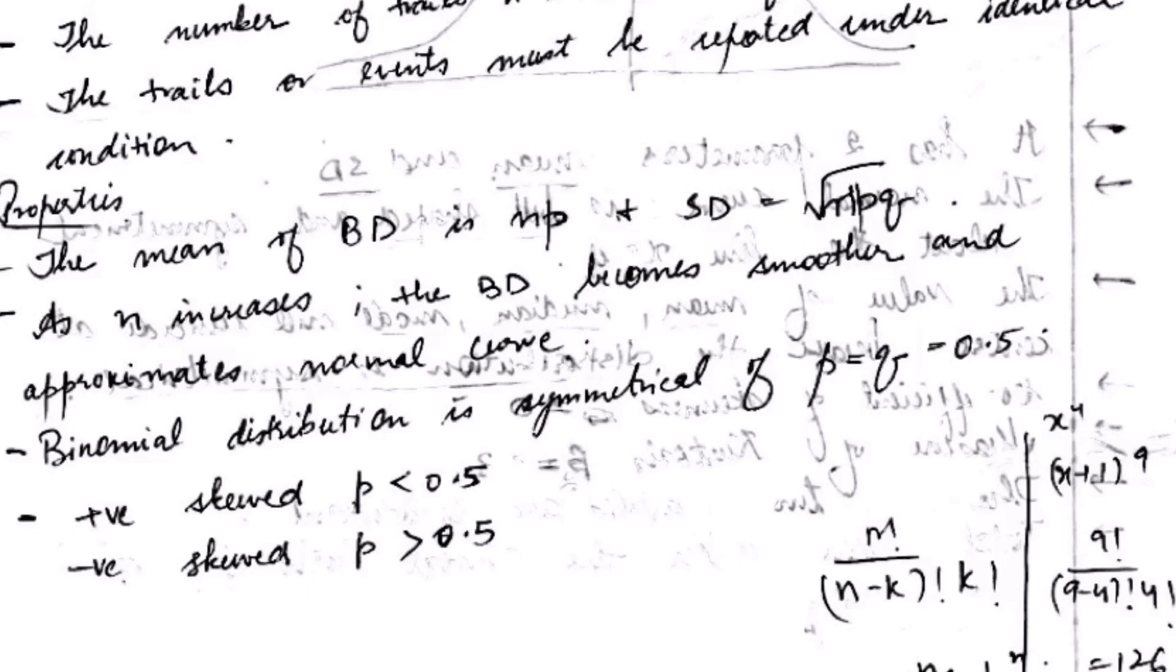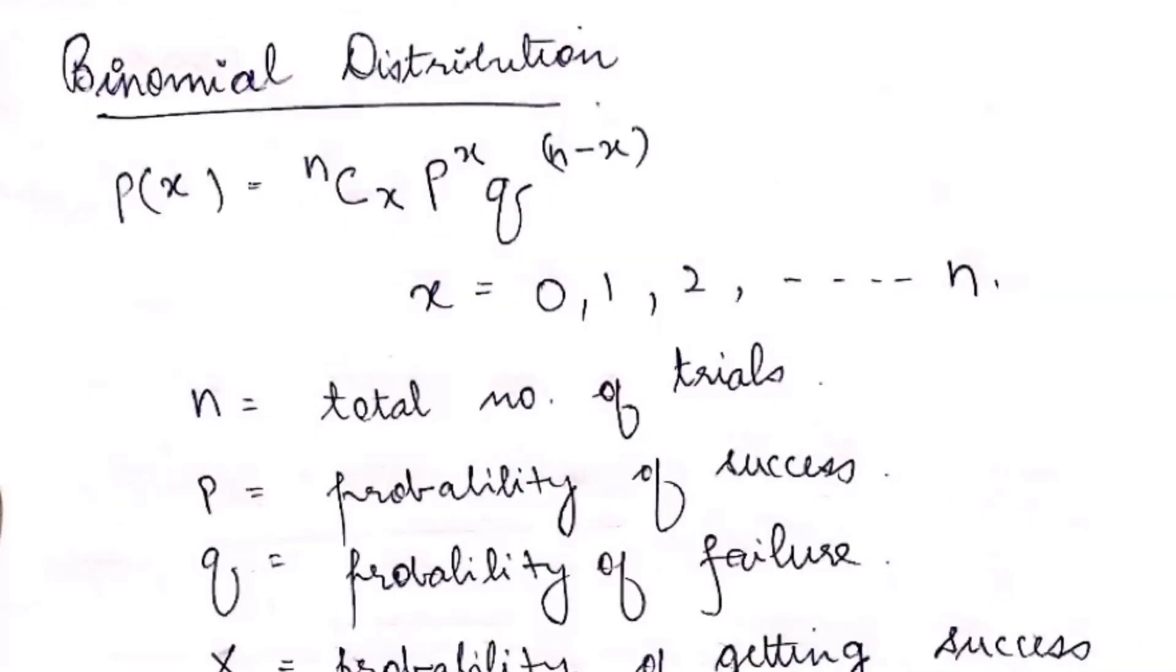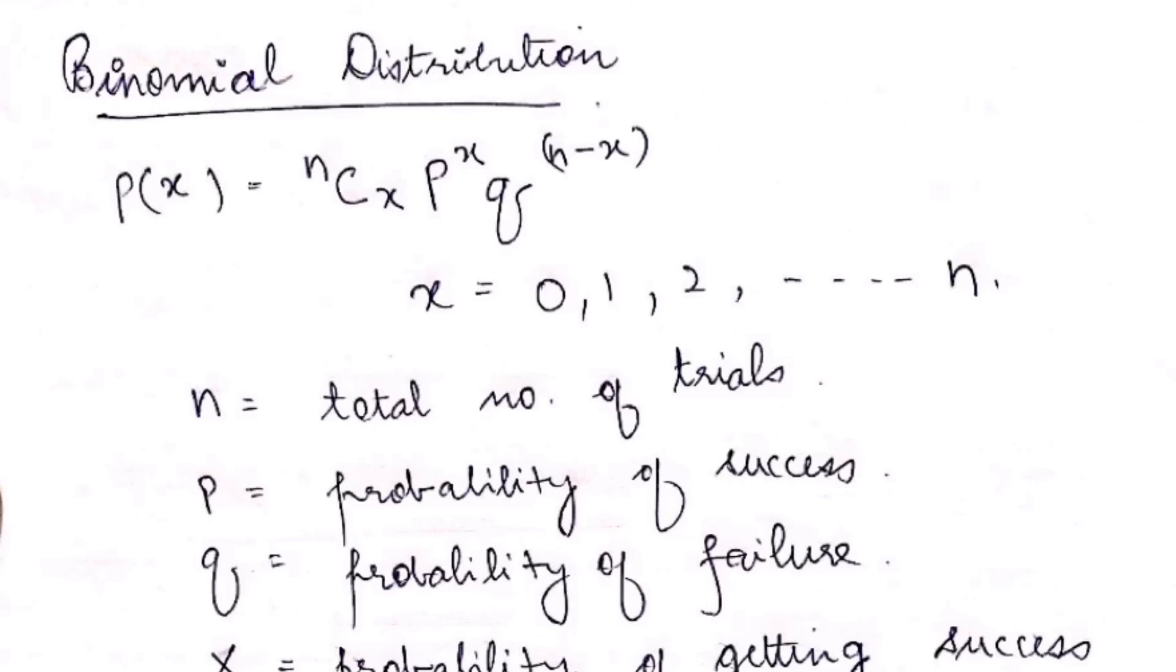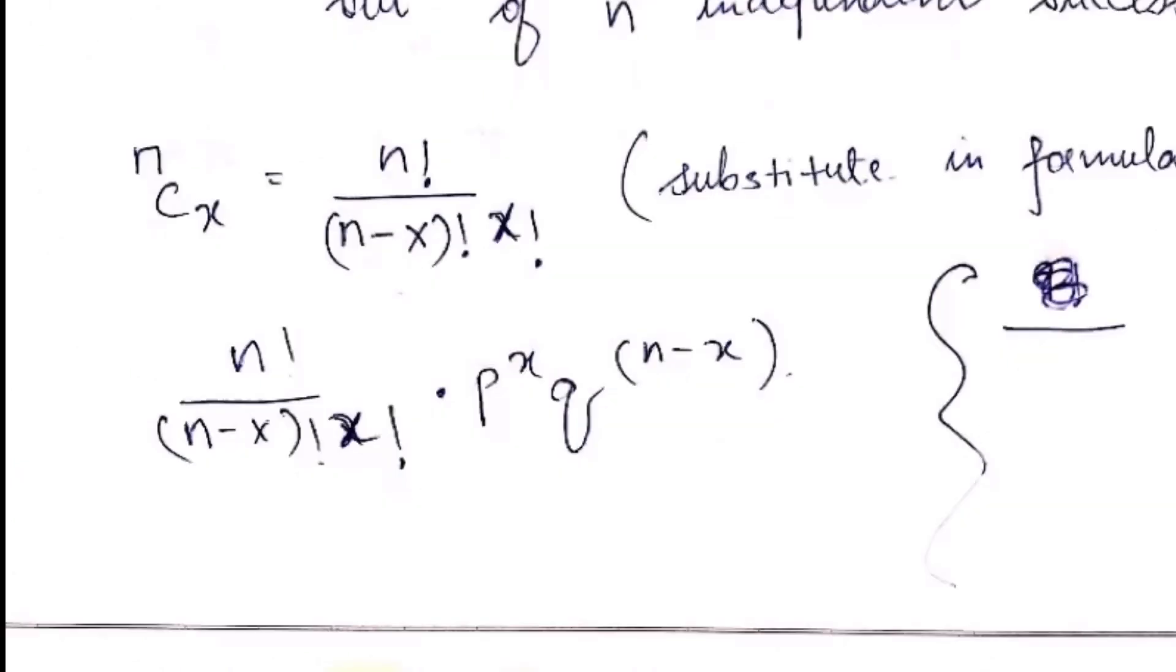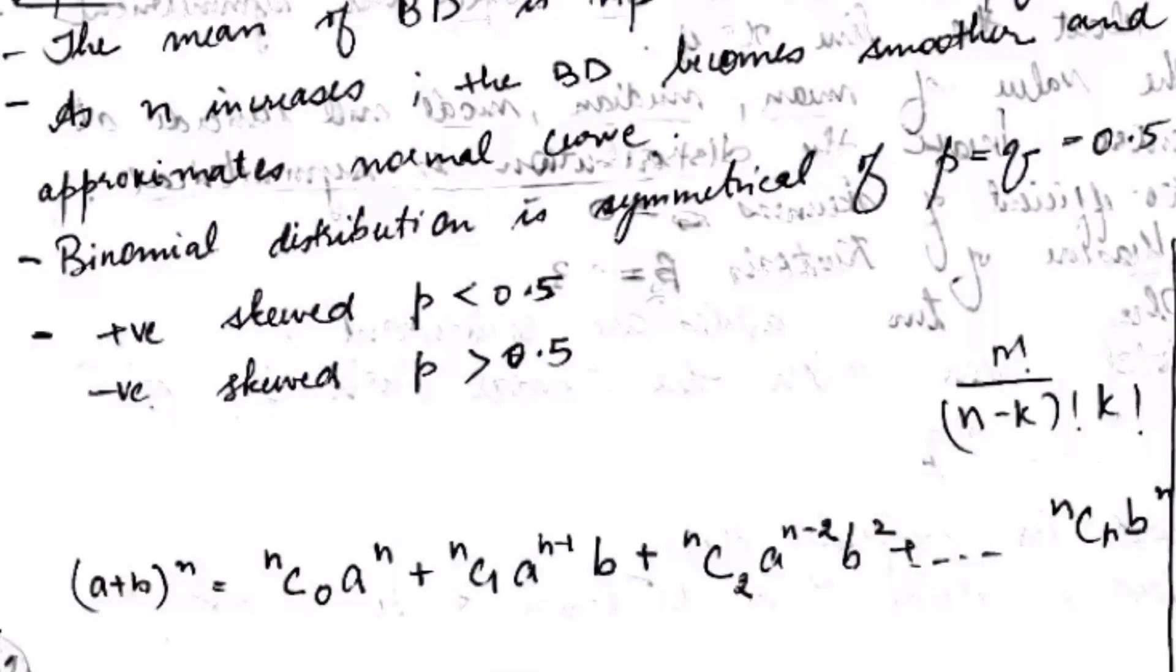This is the formula for binomial distribution where n is number of trials, p is probability of success, q is probability of failure, and x is the probability of getting success out of n independent success. To find out nCx we use the factorial: n factorial upon (n - x) factorial times x factorial. Then we substitute the formula into the original formula and we get the binomial distribution.